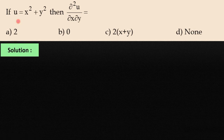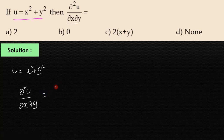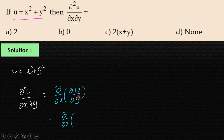Given u = x(x² + y²). Now ∂²u/∂x∂y can be written as ∂/∂x of (∂u/∂y). Partially differentiating u with respect to y, x is constant, so ∂u/∂y equals differentiation of y² which is 2y.